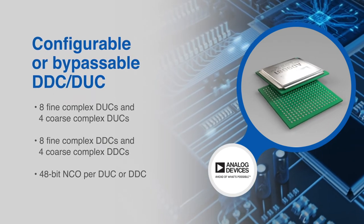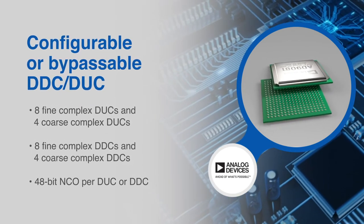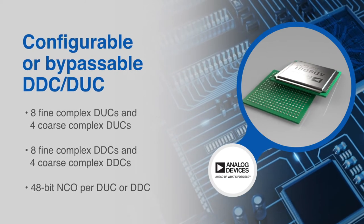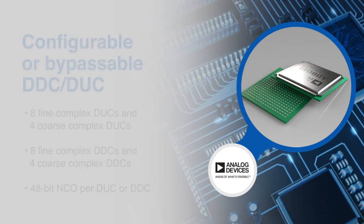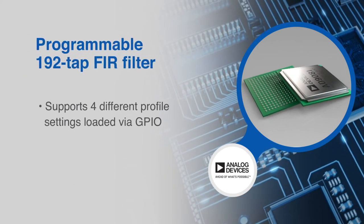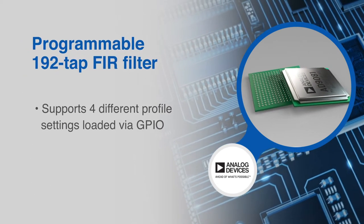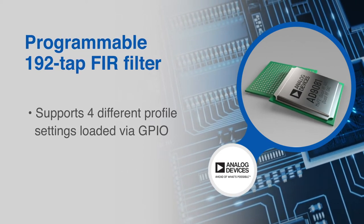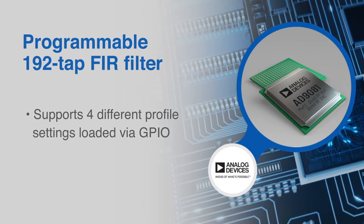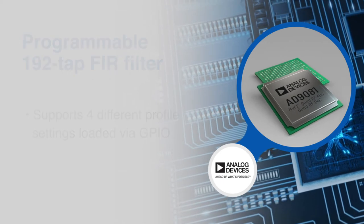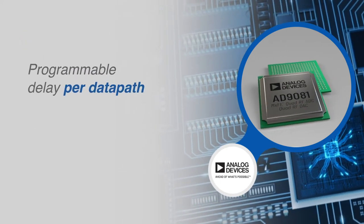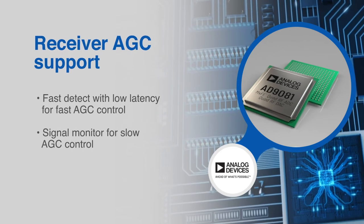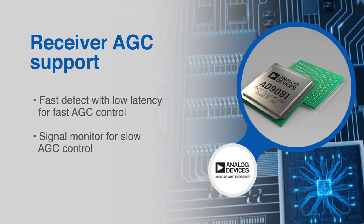The AD9081 also features configurable or bypassable digital up and down conversion, as well as a programmable 192-tap FIR filter for receive equalization that supports four different profile settings loaded via GPIO. There is also programmable delay per data path and receiver automatic gain control support for fast or slow AGC control.